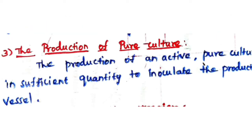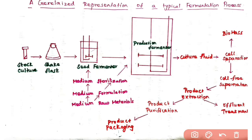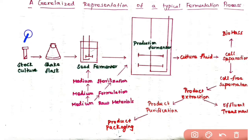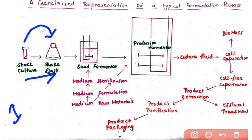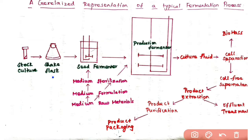The third step is production of pure culture. Here we produce an active pure culture in sufficient quantity to inoculate the production vessel. The desired organism is taken from stock culture — also known as the inoculum vial. A few microliters of inoculum are taken from the vial and transferred into a shake flask containing growth media. This transfer process is known as inoculation.